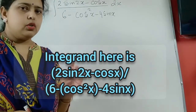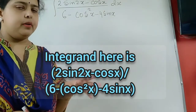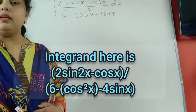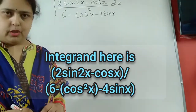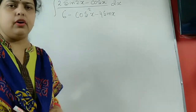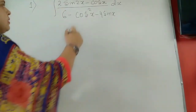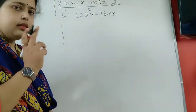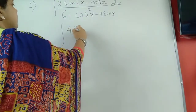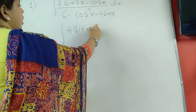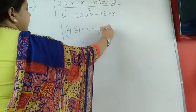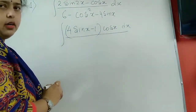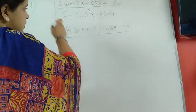Let us convert into one single term so we get a proper value of the integral. For that we need a proper substitution. First, sin(2x) is converted into 2sin(x)cos(x), which gives 4sin(x)cos(x). Taking cos(x) as common in the denominator, we have cos²(x).